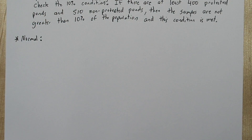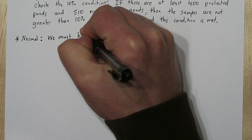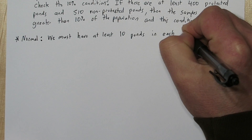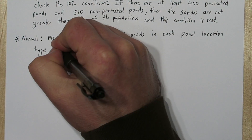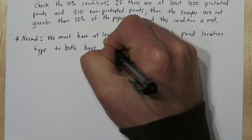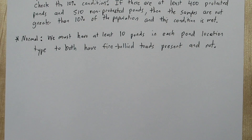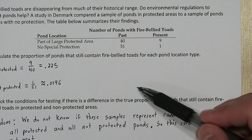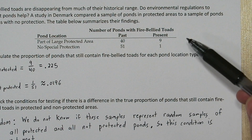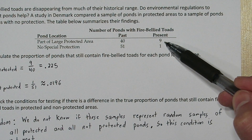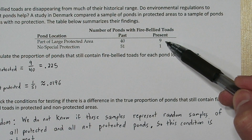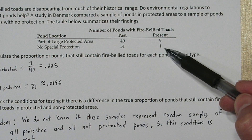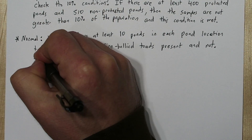Finally, for the normal condition to be met, we must have at least 10 ponds of each type that have fire-bellied toads, and 10 ponds of each type that do not have fire-belly toads. In other words, all values in our table must be at least 10. We see that for the protected ponds there were only 9 with fire-bellied toads, and only 1 for the non-protected ponds. So this condition is not met.